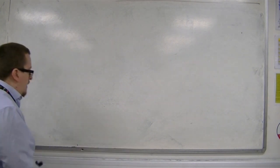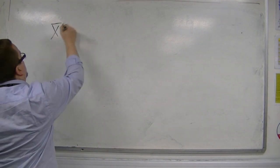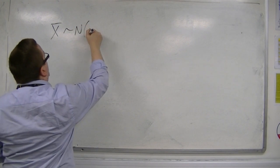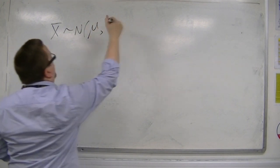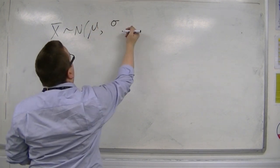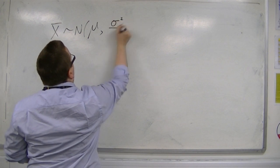So, let's say we have x bar, which is normally distributed with a mean mu, and a variance which we know is sigma squared over n.